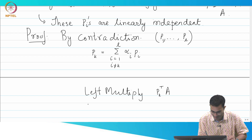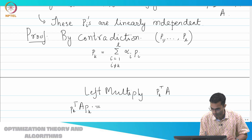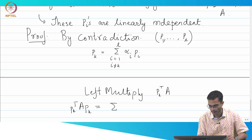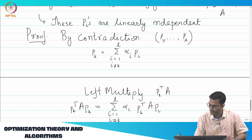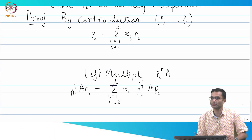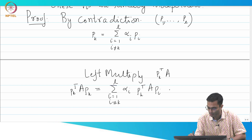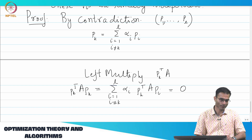If I stick this in, the left hand side is going to give PK transpose A PK. On the right hand side, I get sum of alpha_i times A times Pi, for i from 1 to L, i not equal to K. The property of A-conjugacy is going to give the right hand side as 0, because there is no PK left to act on — so this is equal to 0.